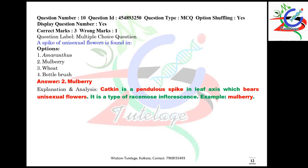Question number ten: a spike of unisexual flowers is found in which plant? It is found in mulberry. A catkin is a pendulous spike in leaf axils which bears unisexual flowers — it is a type of racemose inflorescence. The example is mulberry.